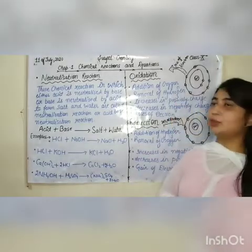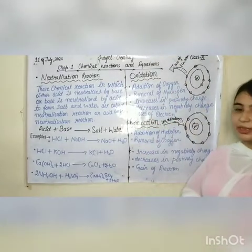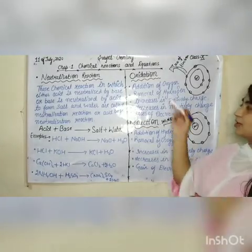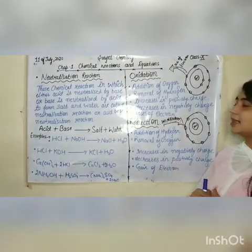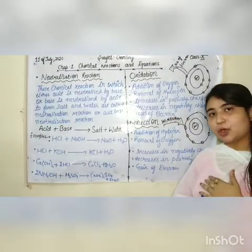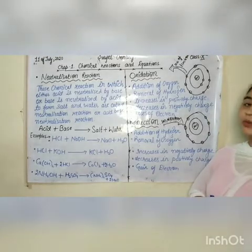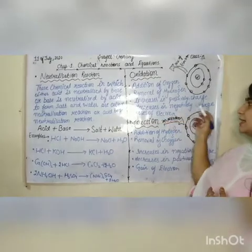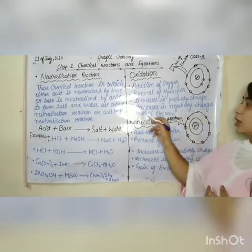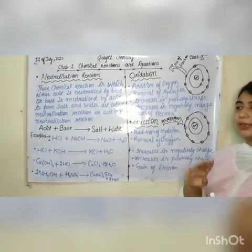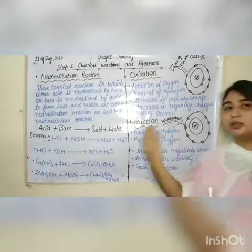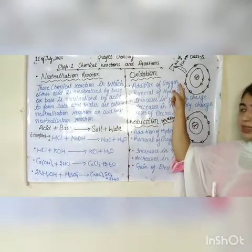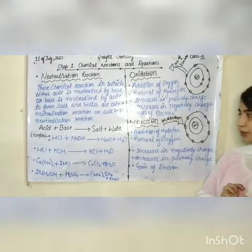अब next आपका topic है oxidation and reduction — बहुत important topic है। Oxidation: name से हमें पता चल रहे है — addition of oxygen and removal of hydrogen, increases in positive charge, increases in negative charge, और loss of electron यानी electron का loss होना। ये oxidation के लक्षण हैं: addition of oxygen, removal of hydrogen।